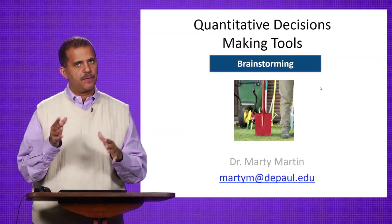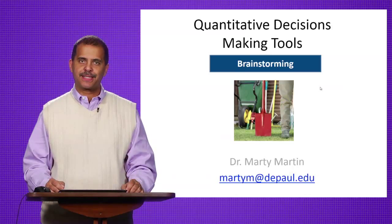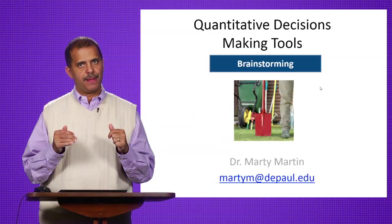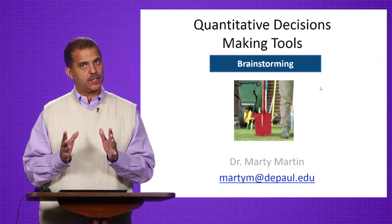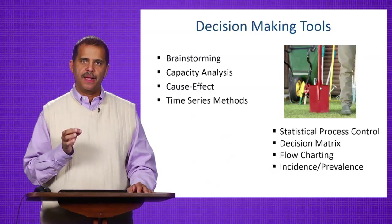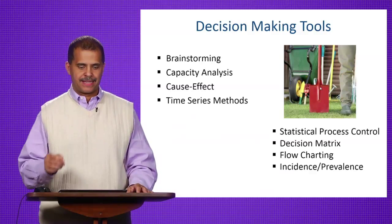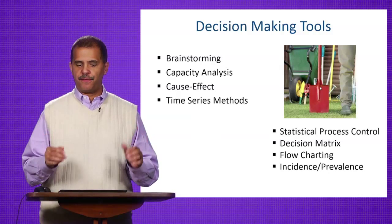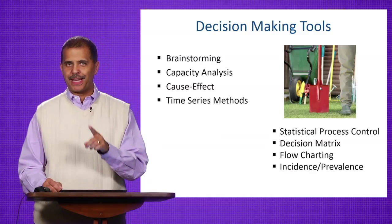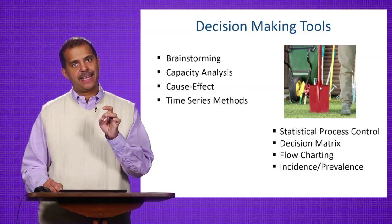We've been talking about quantitative tools and quantitative aspects in healthcare management. The last part focused on structured decision making and barriers to good decision making. Now I want to present a whole series of tools: brainstorming, capacity analysis, cause and effect, time series methods, statistical process control, decision matrix, flow charting, and lastly, incidence and prevalence.